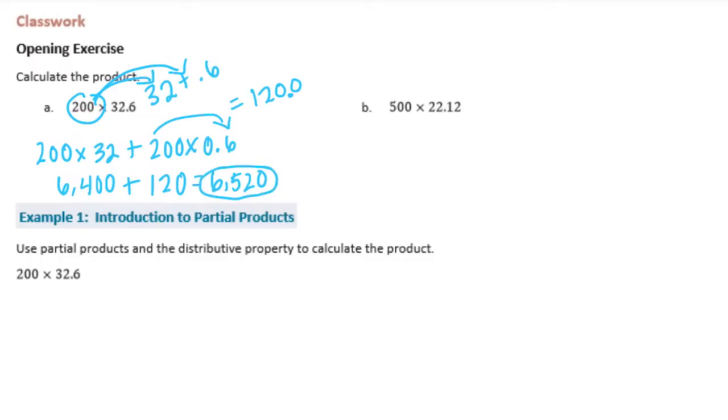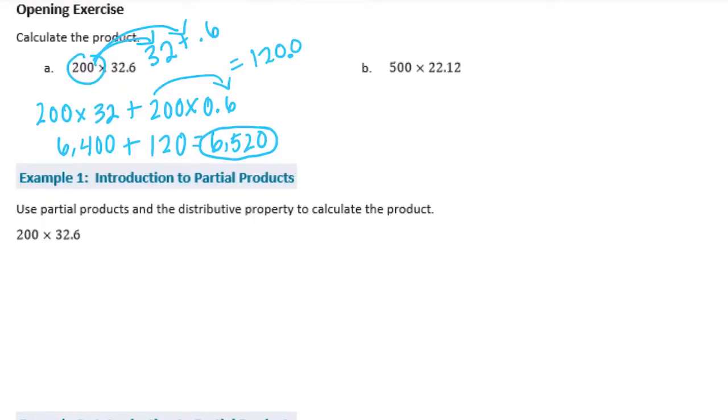That's another way to do it that's not just multiplying like we learned in fifth grade. Before going to b, since example one asks us about the same problem, I'm going to use partial products. Partial products is basically like the area model method. Let's make an area model and multiply 200 times 32.6, splitting it up into 32 and 0.6.